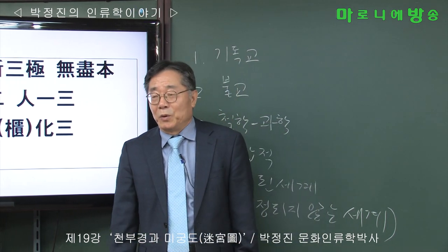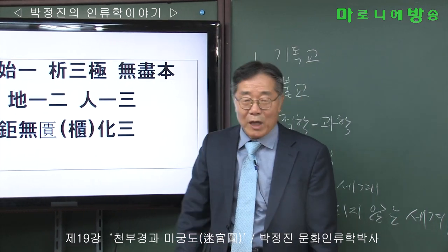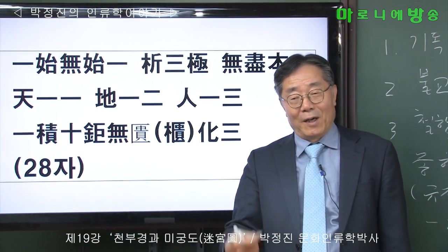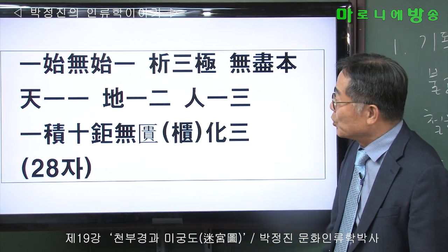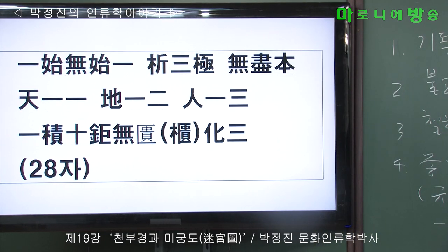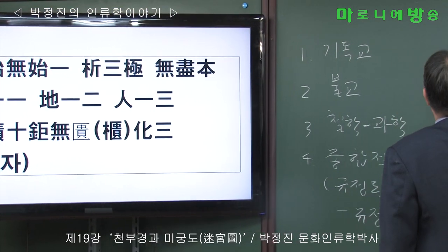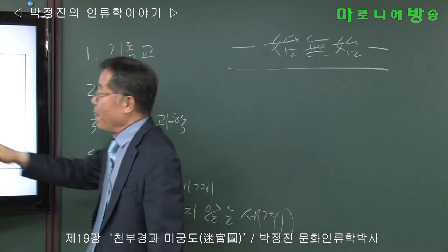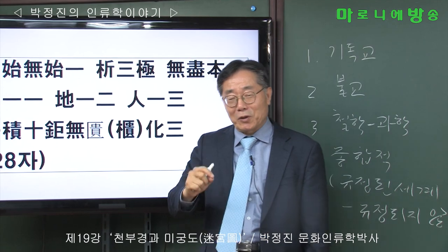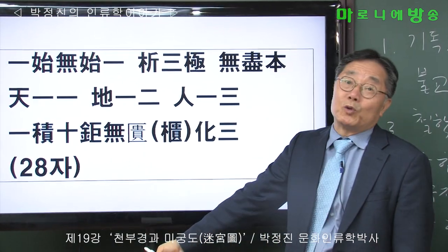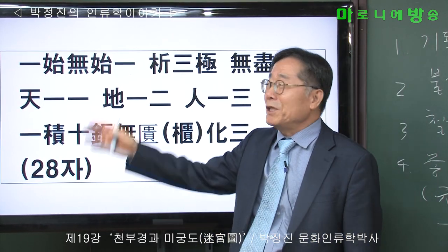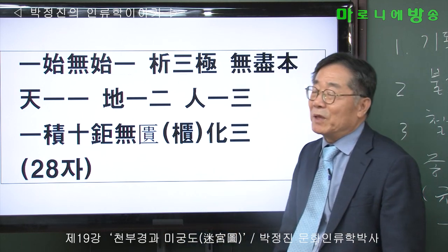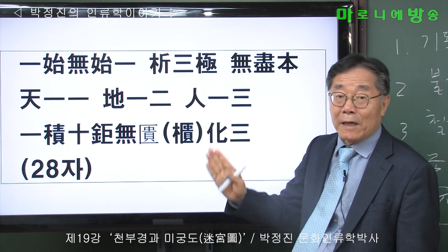기독교 경전은 태초에 하느님이 있었다, 말씀이 있었다, 하느님이 아담과 이브를 만들었다 이렇게 얘기를 하죠. 일시무시일, 이 다섯 한자를 제대로 해석하면 사실 천부경 전체가 파악된 겁니다. 일시가 있고, 무시일이 있으니, 이 다섯 글자가 굉장히 중요합니다.